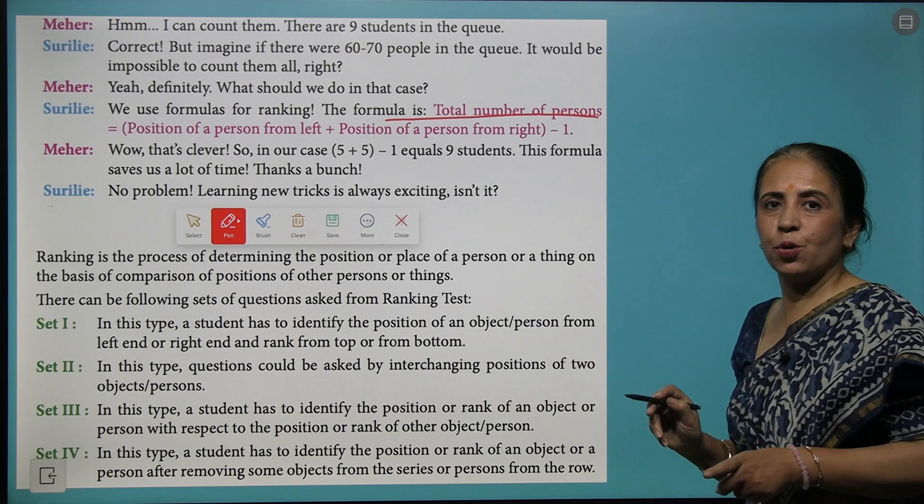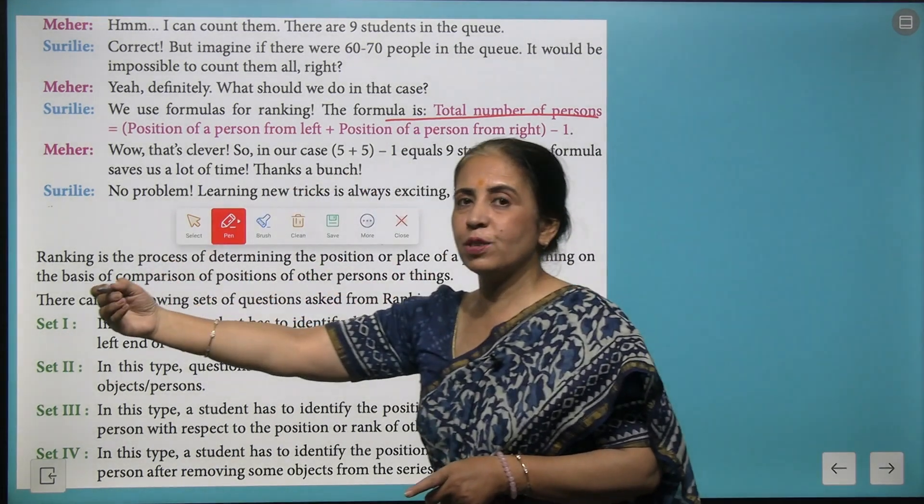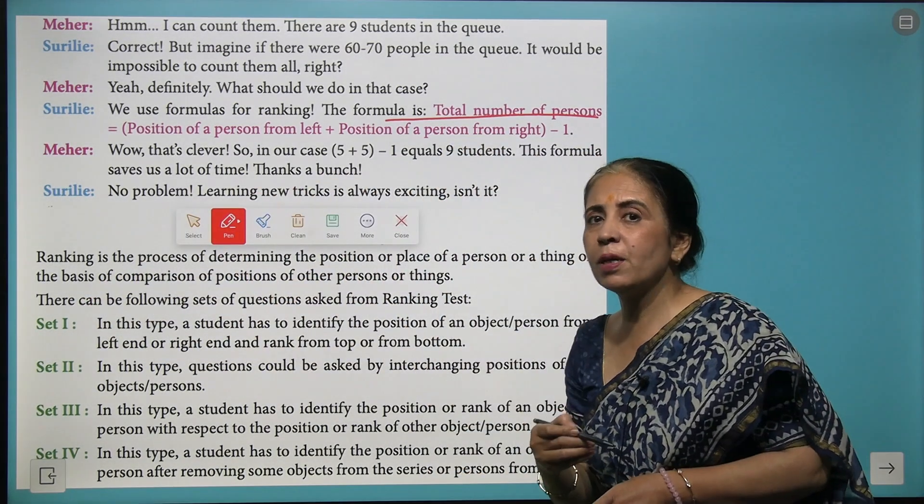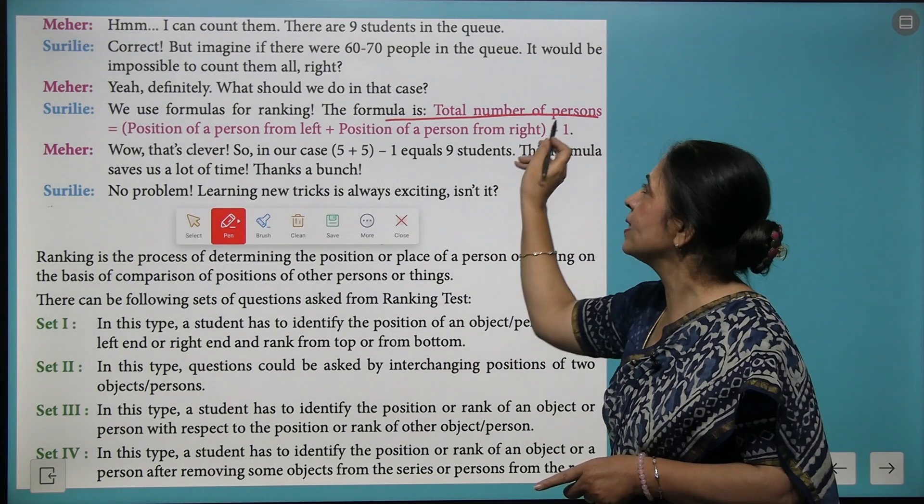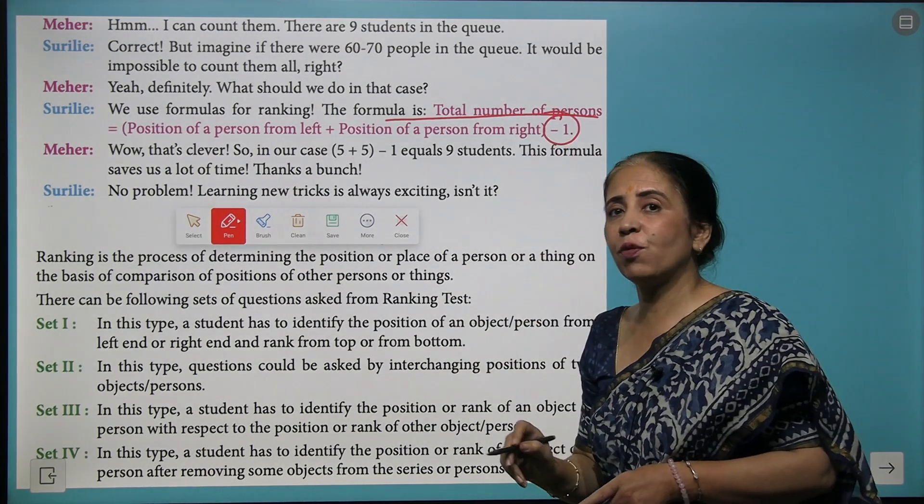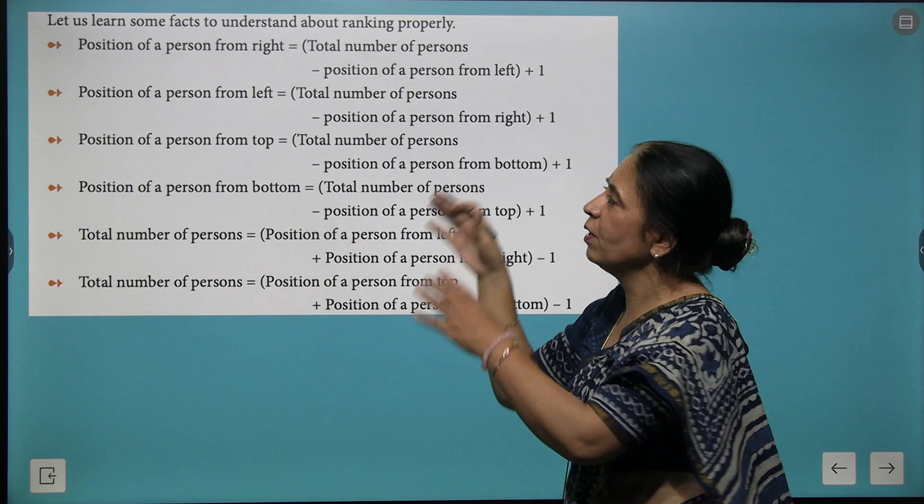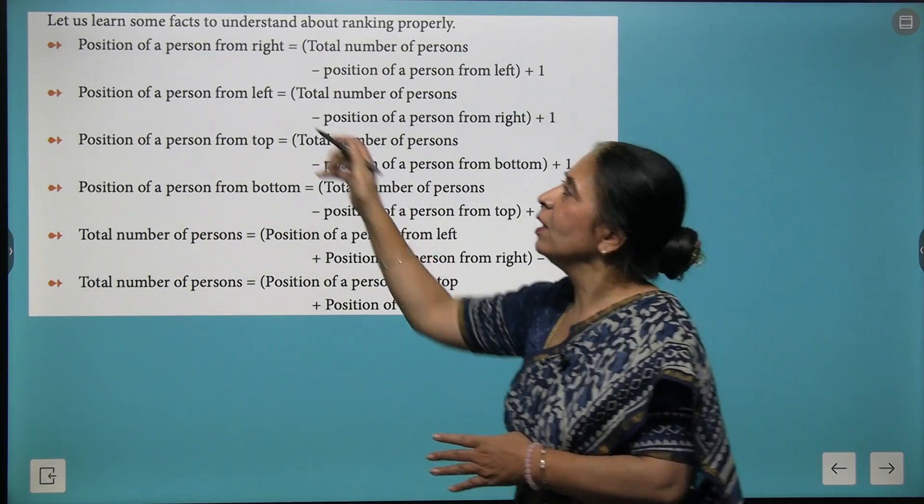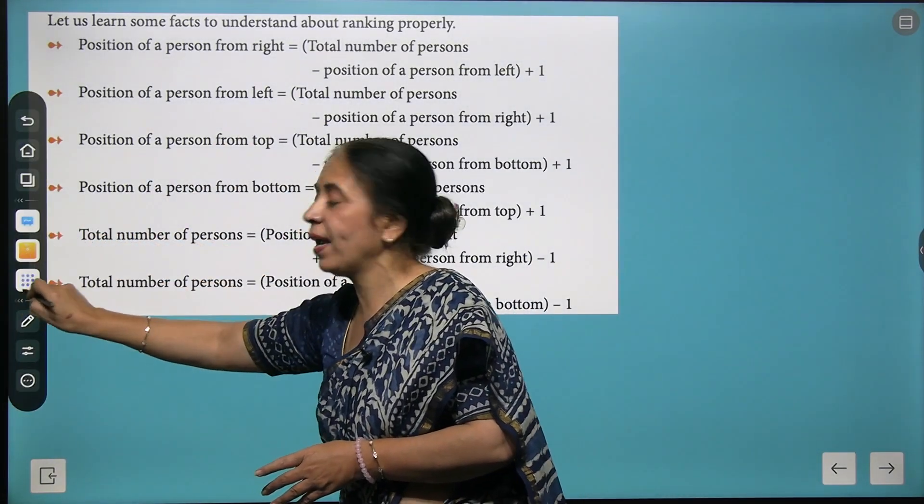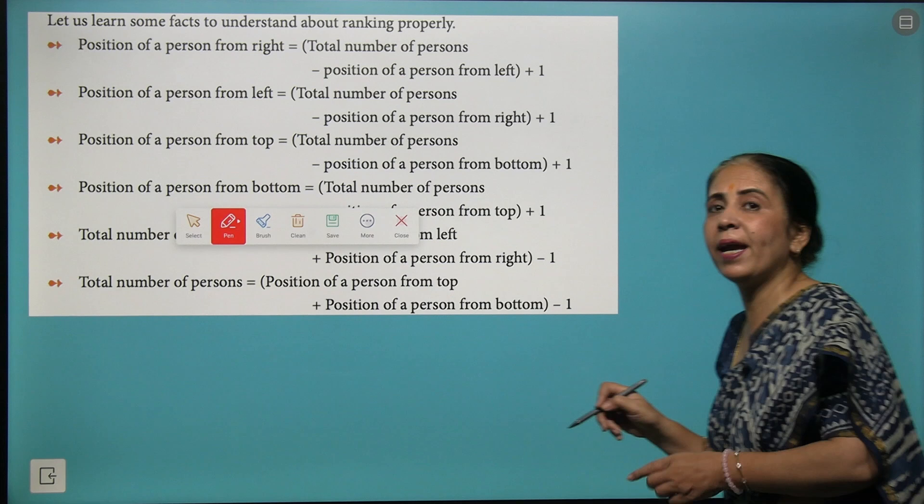Also remember the formula to count the total number of persons in a row: position of a person from the left side plus the position of a person from the right side, then subtract one from it.